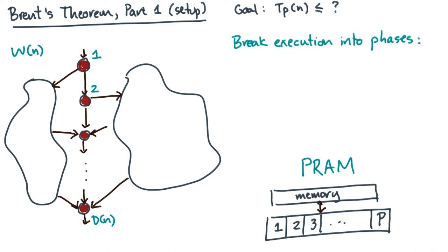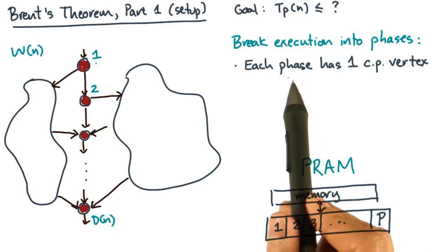The first condition is that each phase has exactly one critical path vertex. Note that this condition immediately implies that there have to be d(n) phases. So let's say I've numbered the critical path vertices from one to d(n). Then this condition implies that there will be d(n) phases.